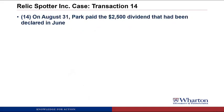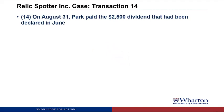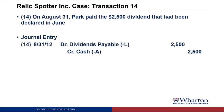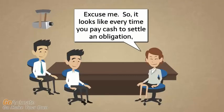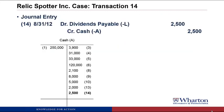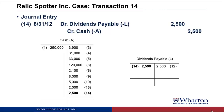Transaction 14. On August 31st, Park paid the $2,500 dividend that had been declared in June. We're paying $2,500 cash, so that's a credit to cash for $2,500. The debit is dividends payable because we're paying off what we owe the shareholders for the dividend, reducing that liability. We reduce liabilities with a debit, so we debit dividends payable for $2,500. Every time you pay down a liability, you debit the liability and credit cash. This zeroes out the dividends payable account — we don't owe shareholders any more money for the dividend.